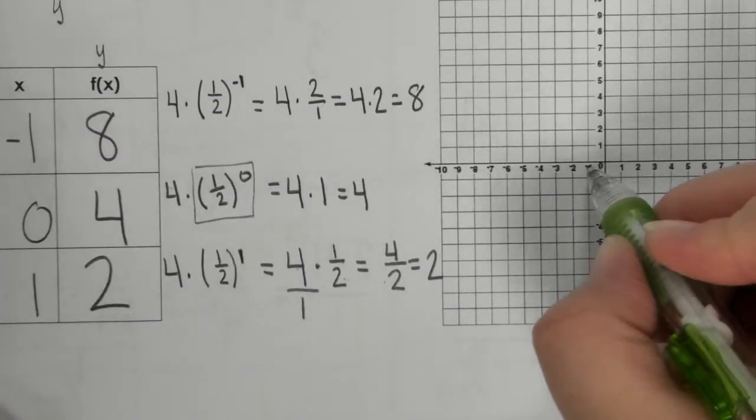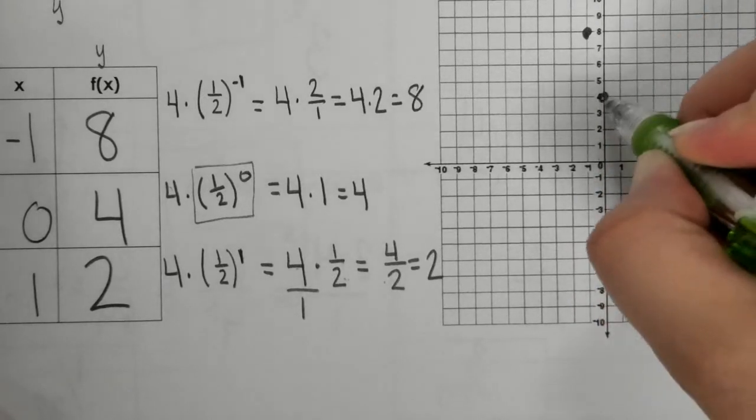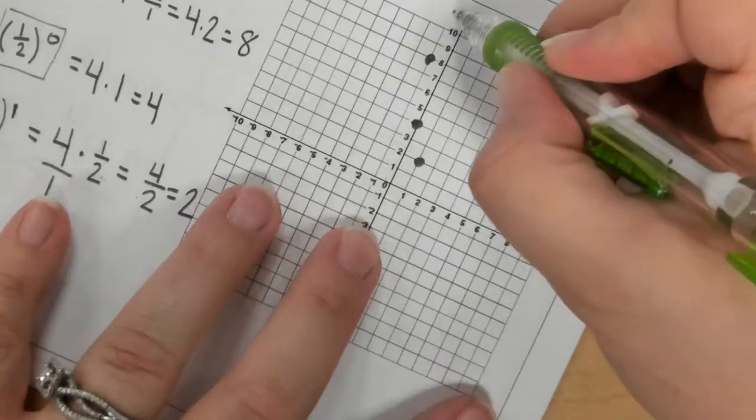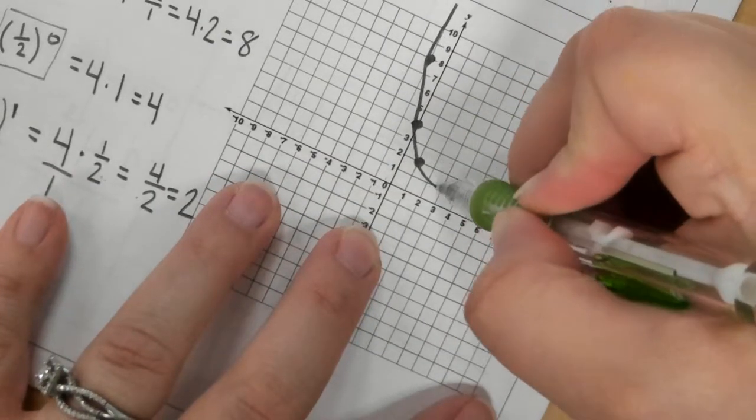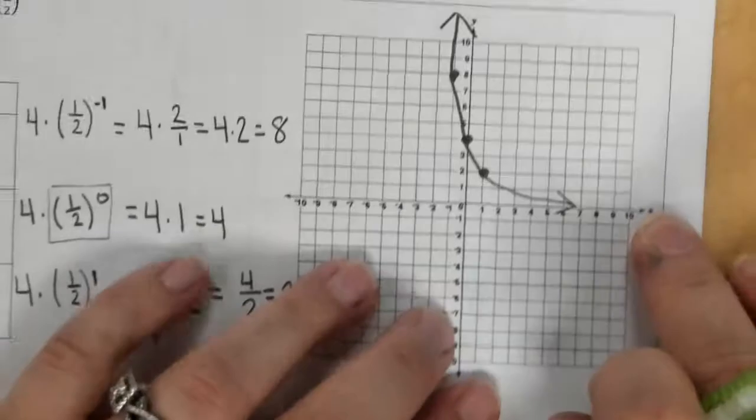So now I graph these. Negative 1, 8, 0, 4, and 1, 2. And I draw my curve, getting really close to x, but never actually getting there. Like so.